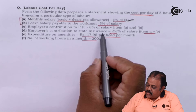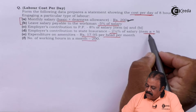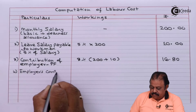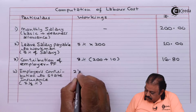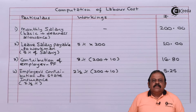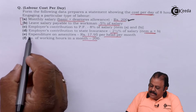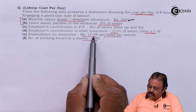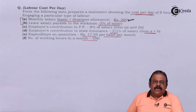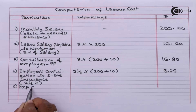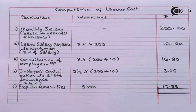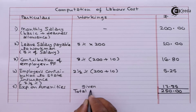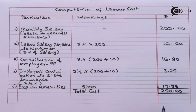Employer's contribution to state insurance is two and a half percent of salary items A plus B, so it is rupees 5.25. Expenditure on amenities: rupees 17.95 per head per month. We can add all expenses to arrive at total cost, so we got total cost: 250 rupees.